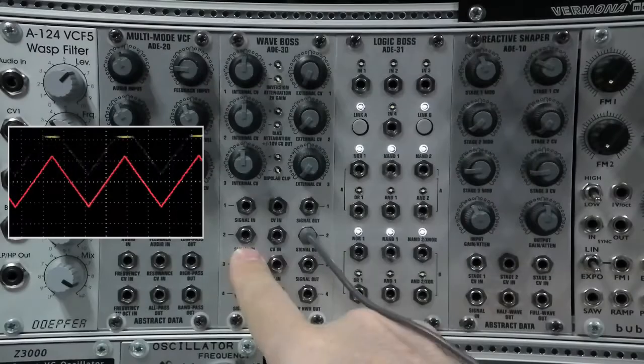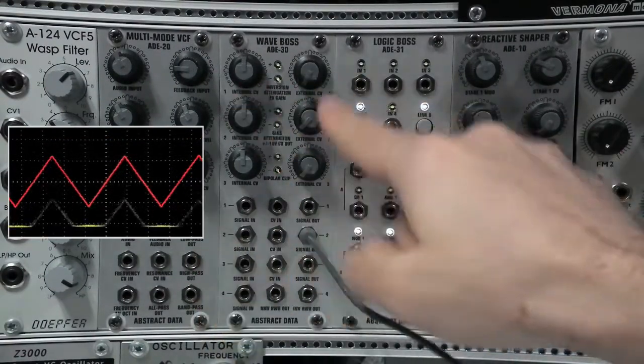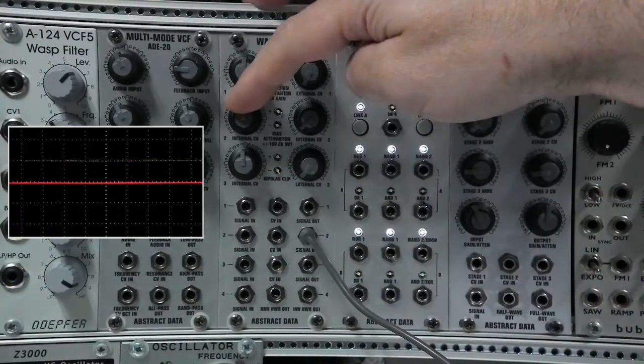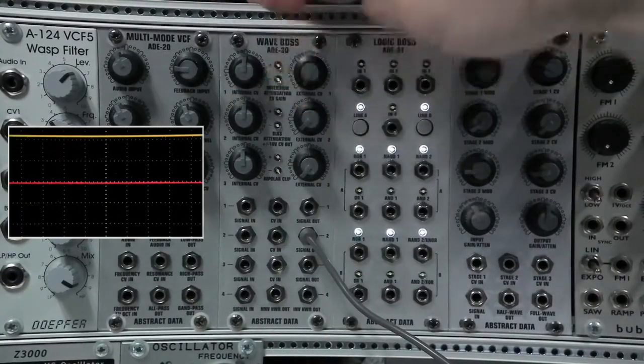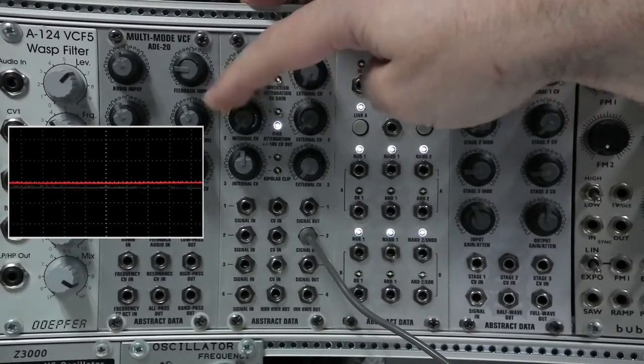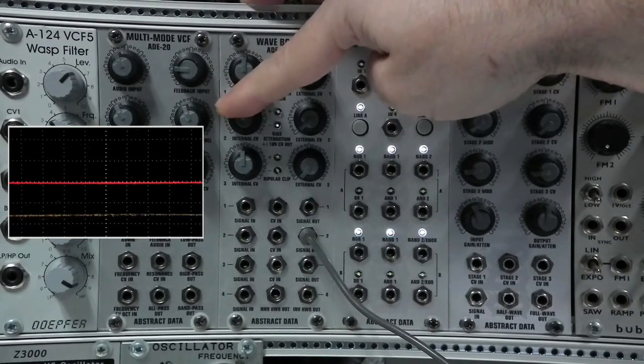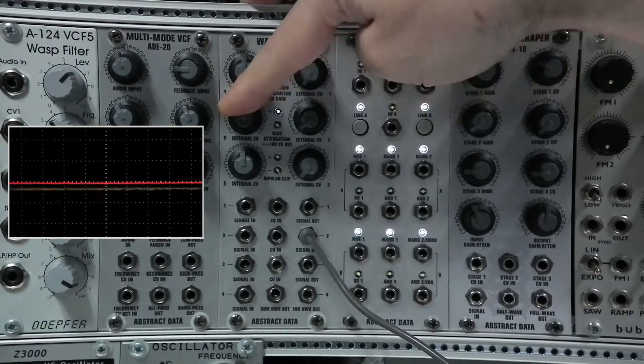This patch demonstrates using stage two as a plus or minus 10 volt CV source. When there's no input on stage two this will act as a CV source. You can see that sitting at zero volts there and then I can drop that down, bring it up through zero. You can see I'm just on zero there by the LED indicators and then take it up 10 volts full and drop it back down to zero or anywhere in between.